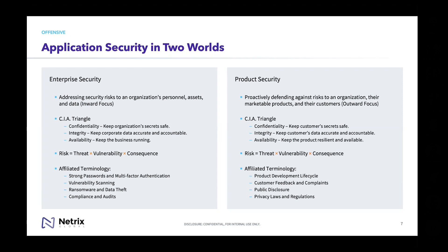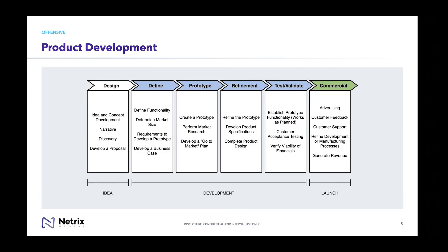For folks that work on the product development side, this is where you'll hear about the development lifecycle, dealing with customer feedback and complaints, dealing with public disclosures when you make mistakes, and upholding privacy laws and regulations depending on the country you're selling to. Product security is something that's very common in many organizations today. If you look at the product development lifecycle, you're working all the way from forming an idea for a product to actually selling it, producing advertising, and getting feedback, with different phases throughout to make sure you're making a good product the market needs.